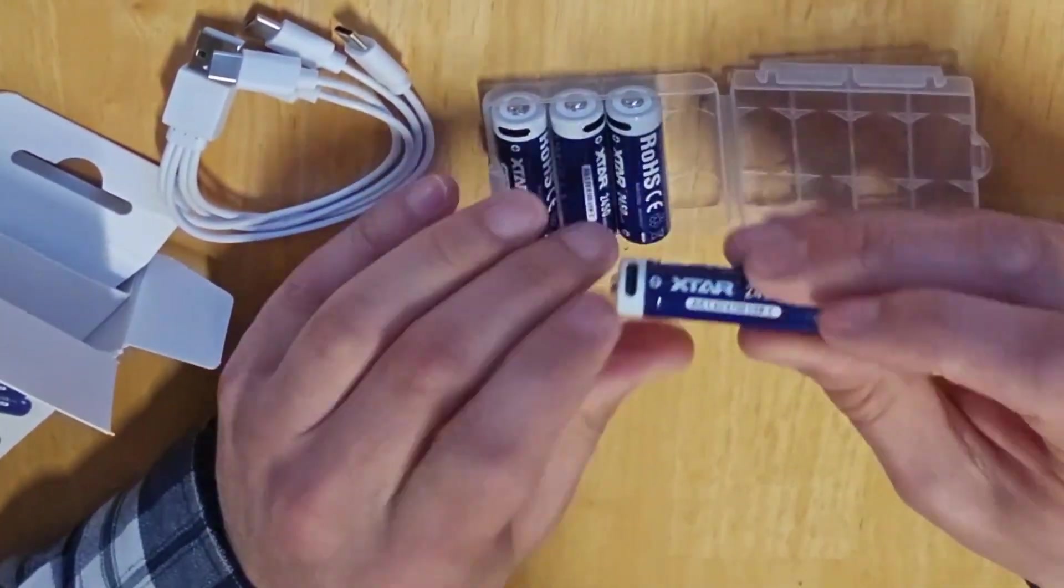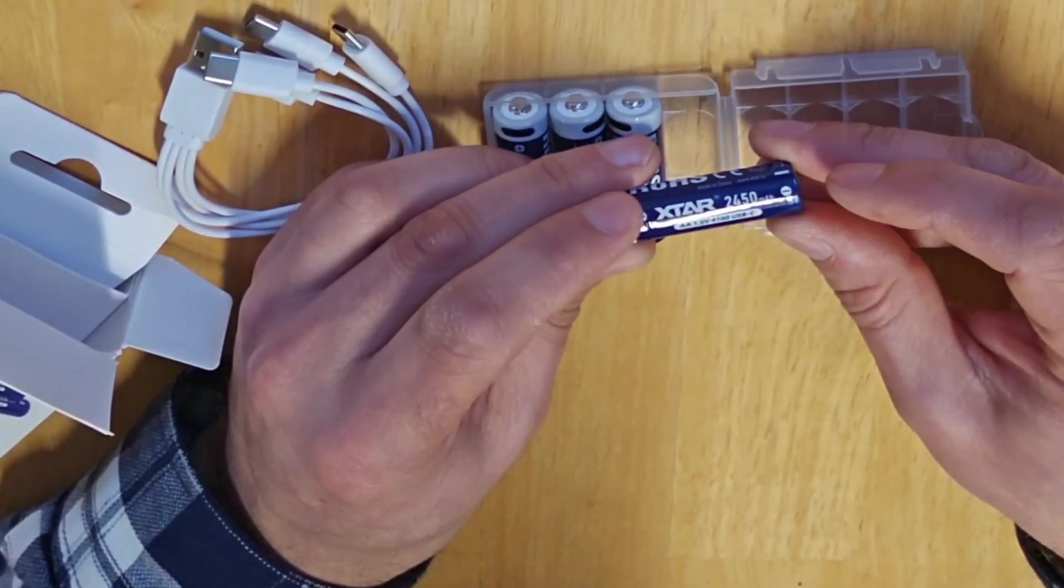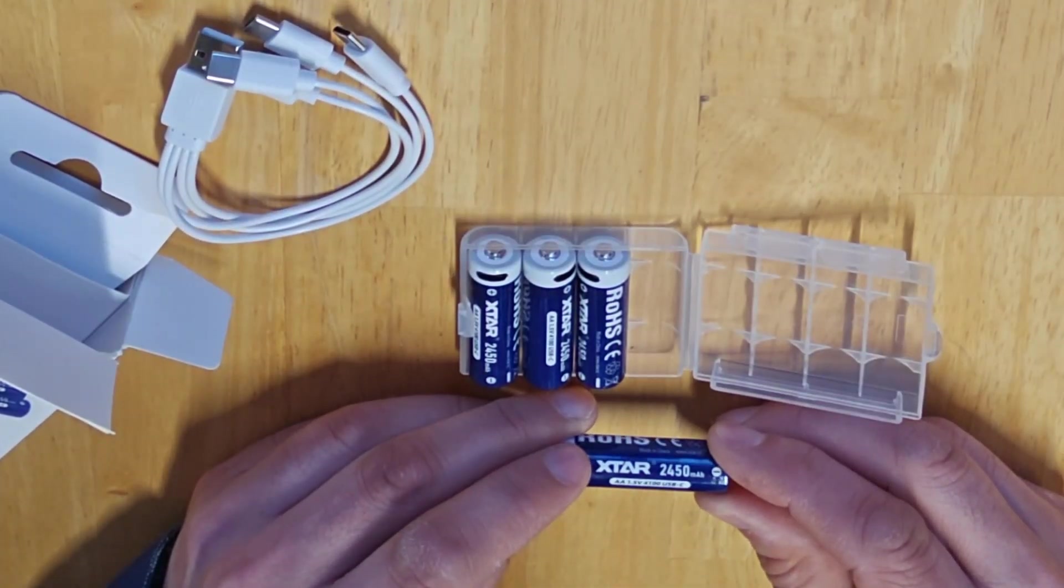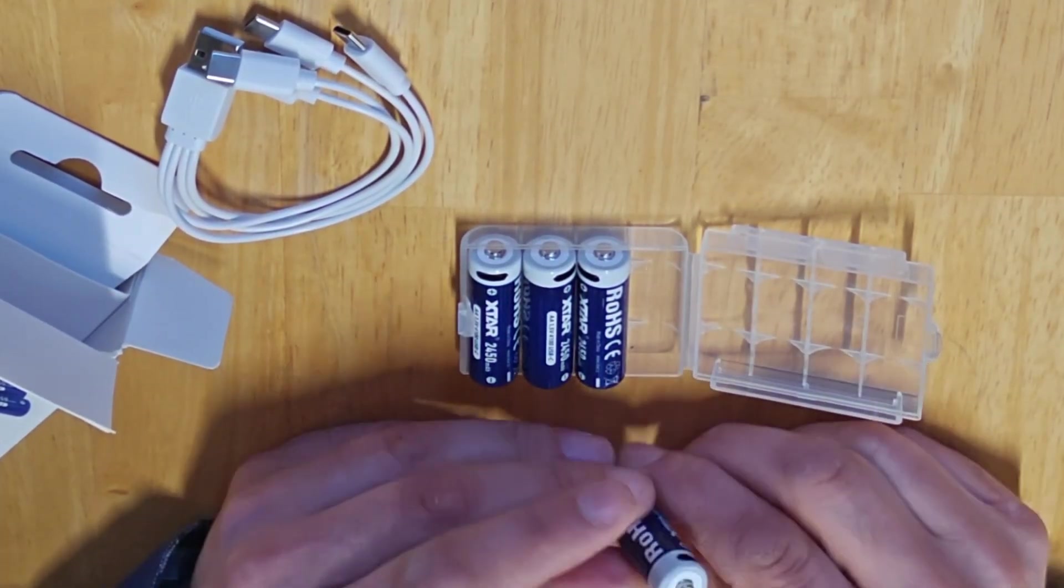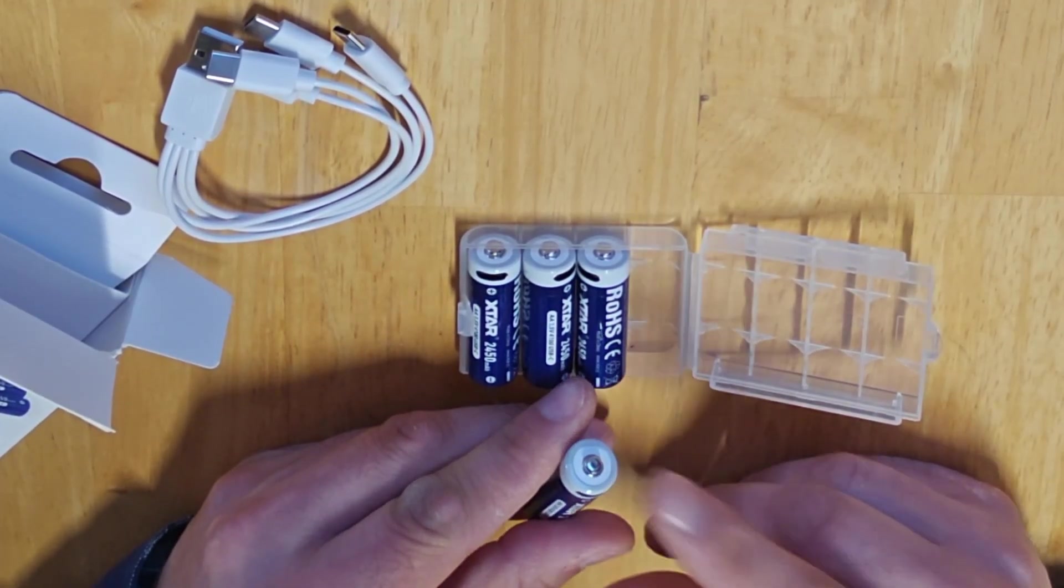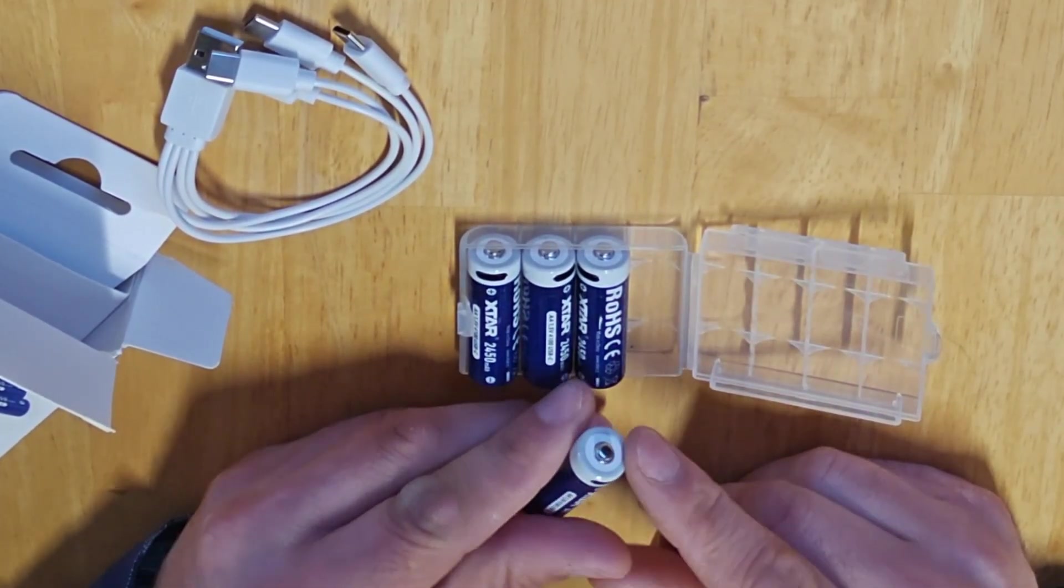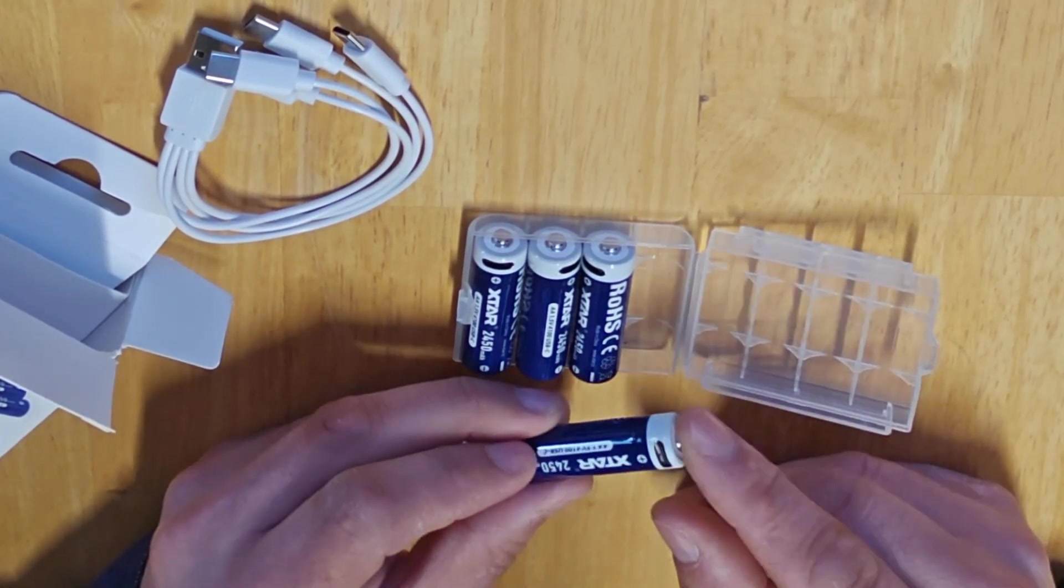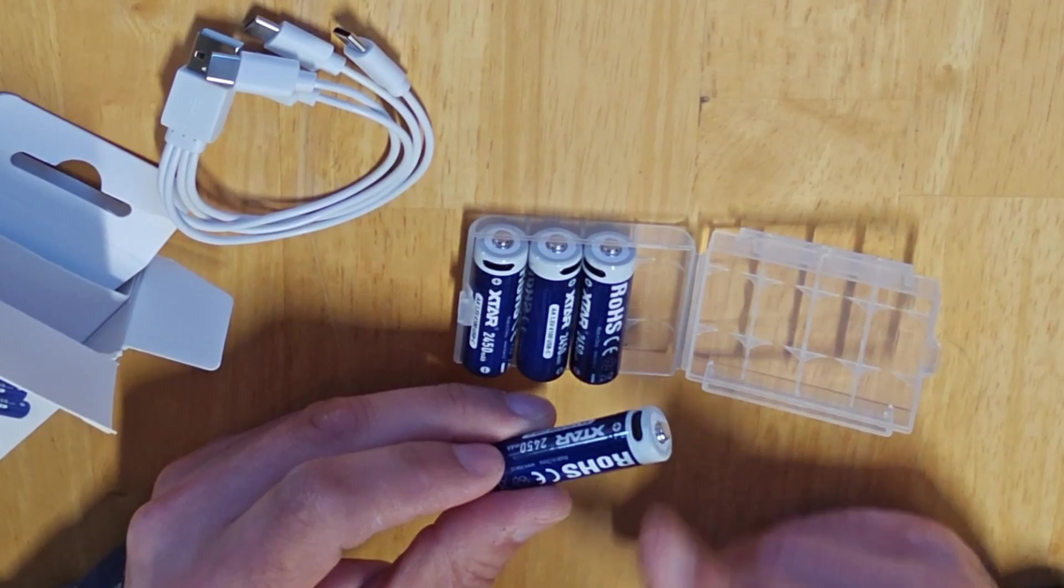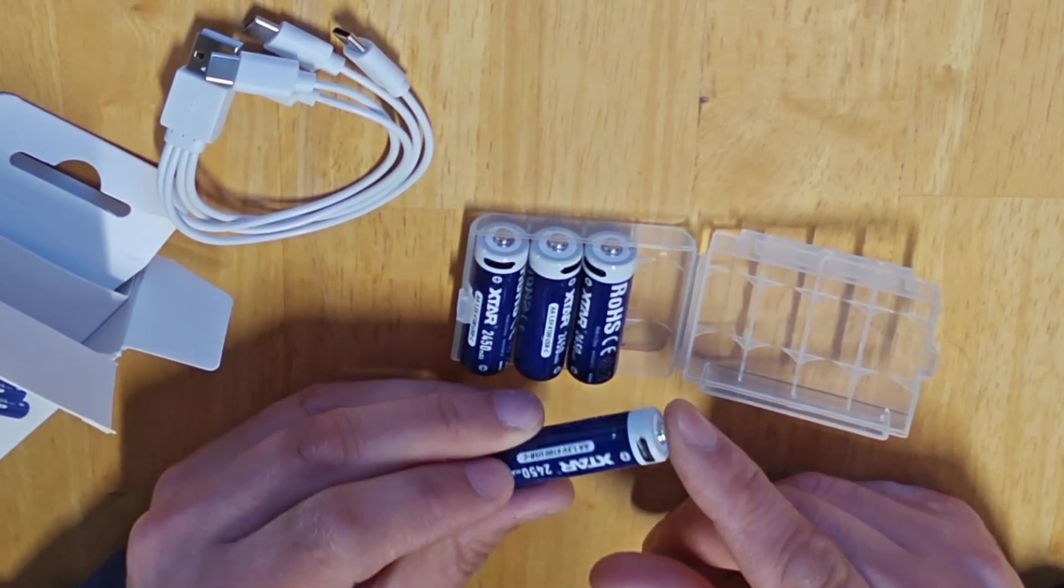And then these are 2,450 milliamp hours. That is quite impressive. So one and a half volts, they must have a DC to DC buck converter in them. It would be interesting to establish whether or not this is noisy, because sometimes these Lithium-Ion Rechargeable USB-C Batteries that have the DC buck converters in them are a little bit noisy.